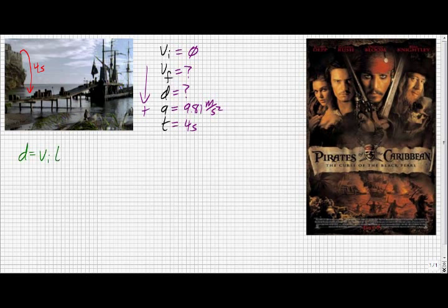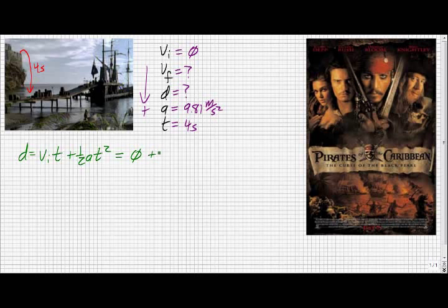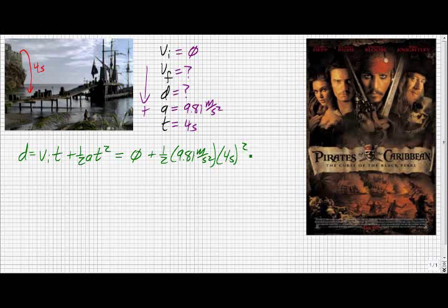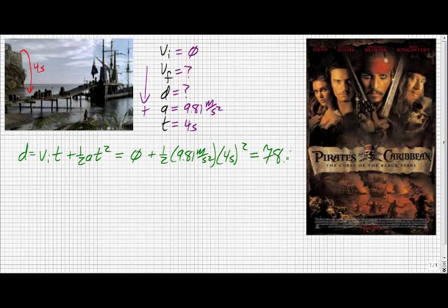Now that we know all this, we can start solving for the distance that she fell, which is also the height of the cliff, using our kinematics equation: D equals VIT plus one half AT squared. We start off by writing the formula, then we substitute in with units. Since VI is zero, VI times T must be zero, plus one half AT squared. A is 9.8 meters per second squared, multiplied by the time squared, which will be four seconds squared.